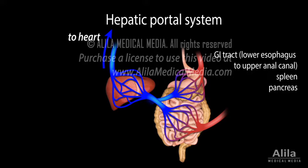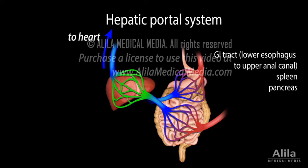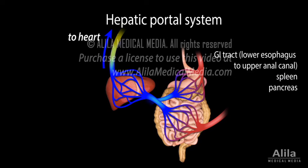This way, all substances absorbed through the GI tract, including nutrients, toxins, and pathogens, are first processed in the liver before they can reach the general circulation. The liver acts like a gatekeeper to the body and serves two major functions in this context.